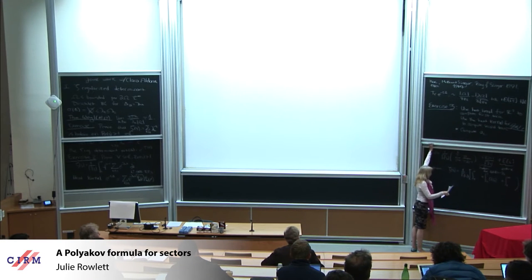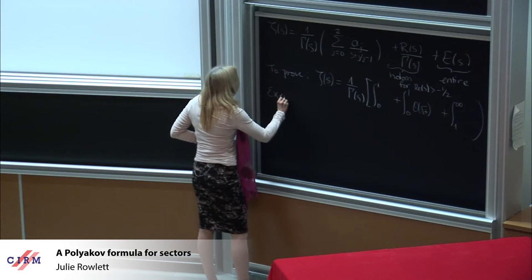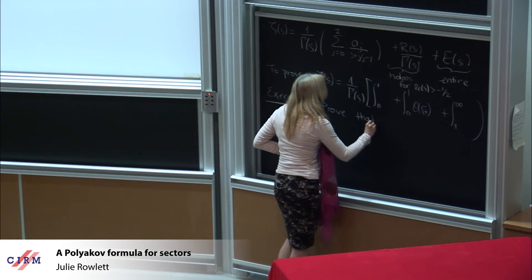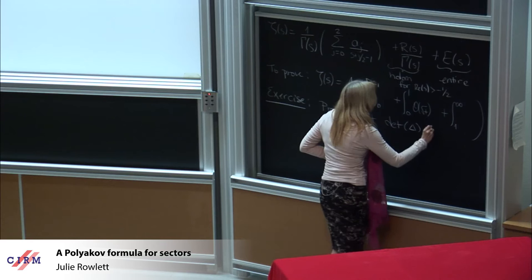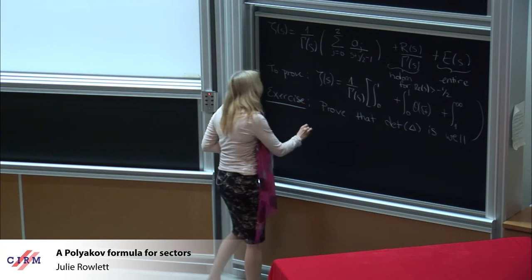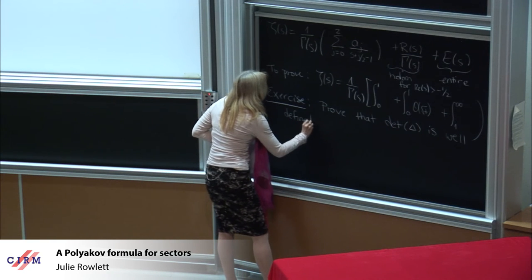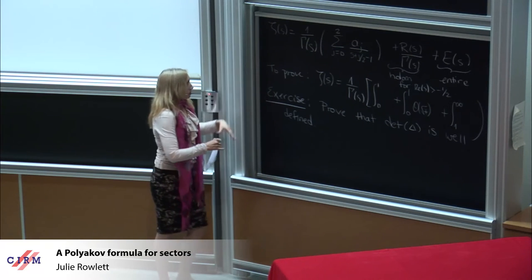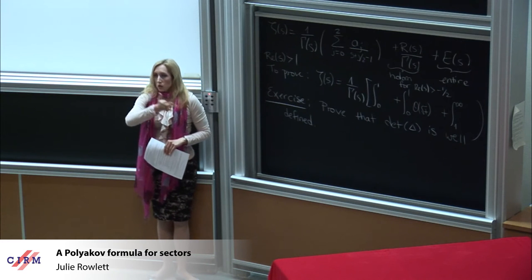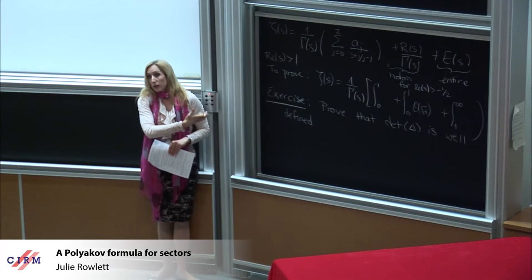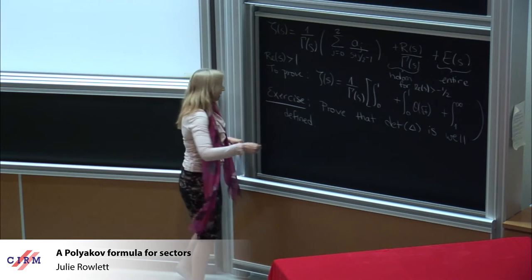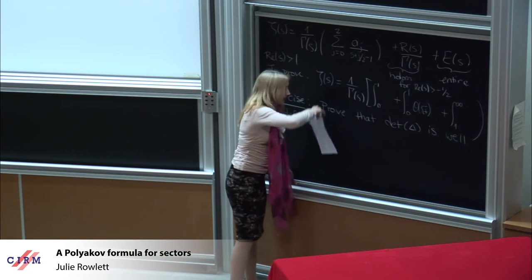This leads to the next exercise. The first part is to prove that the formula for the determinant that I gave you is well-defined. We first do this for real part of s greater than one, and then we use the expression we obtain to show that it is regular at s equals zero. Therefore we can define ζ(0), ζ'(0), and hence the determinant.